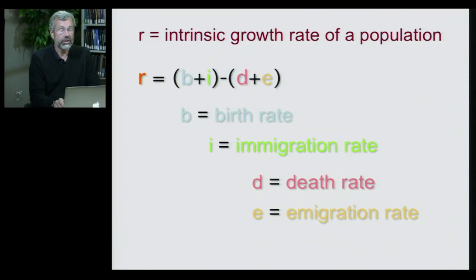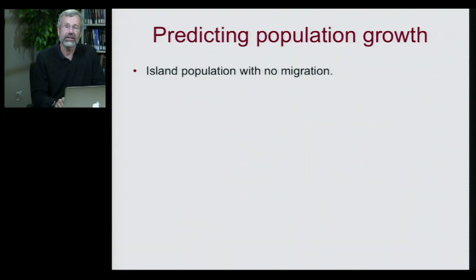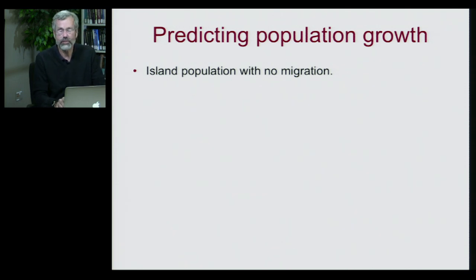If we know all four of these variables, we can then try to estimate the rates at which populations can grow. As population ecologists, we want to be able to predict population growth. Let's take as the simplest possible example an island, which is separated from the mainland, so we can restrict it to just those individuals that live there.